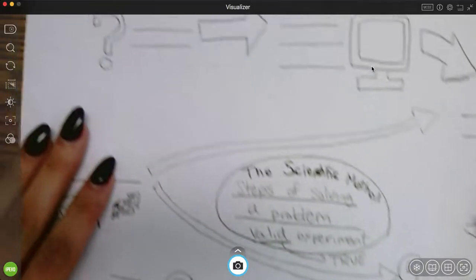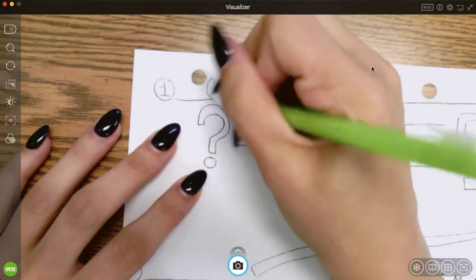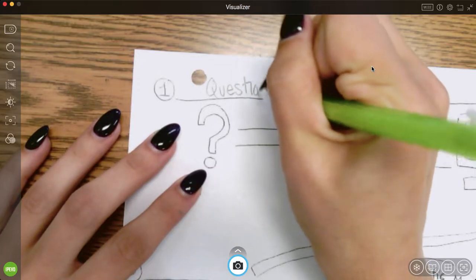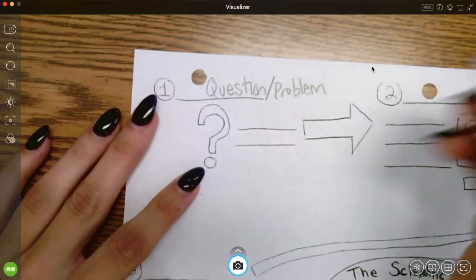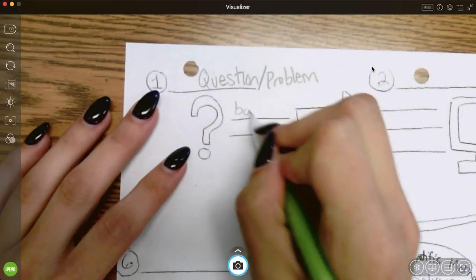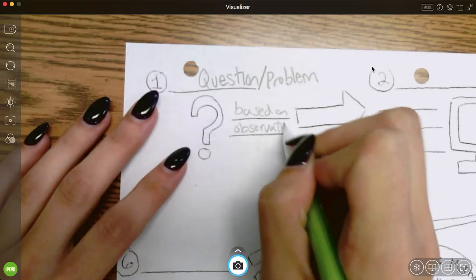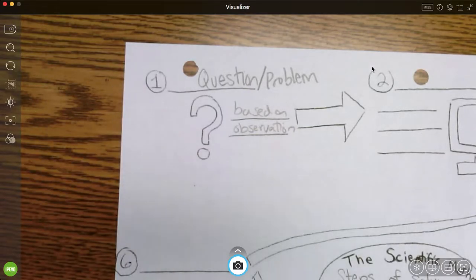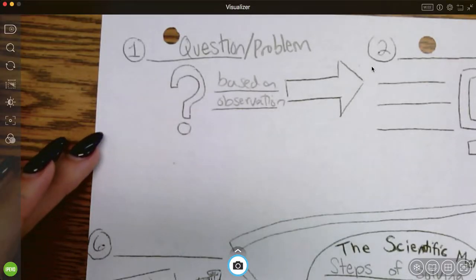So let's start with our first step. It's always good to start here. The scientific method always starts with this. It starts with a question. This question can also be a problem. So this question or problem is going to be based on something that you see, based on observation. So you see something, so maybe you see some of your friends and they're studying, and then some of your other friends are studying the same thing, but they're listening to their music. And you ask, I wonder if that music helps them study better.